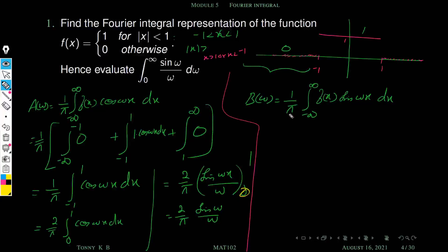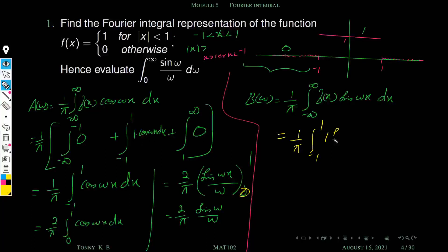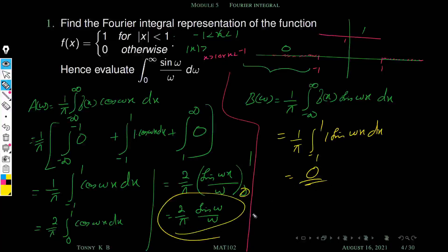Next we calculate b(ω). Similarly splitting the integral, the first and third integrals are zero. The second integral becomes (1/π) ∫₋₁^{+1} 1 · sin(ωx) dx. Since sin is an odd function and this integral is of the form ∫₋ₐ^{+a}, this integral equals zero. So b(ω) = 0.